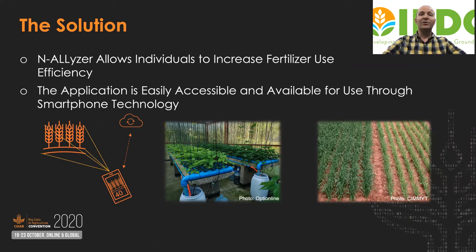Essentially, we are using a smartphone to take a simple picture of the plant and provide the fertilizer recommendation right afterwards. It's based on the well-known correlation between nitrogen and chlorophyll to correctly assess the nitrogen level and get the right balance between all nutrients and nitrogen.